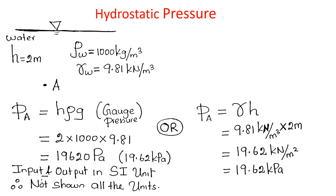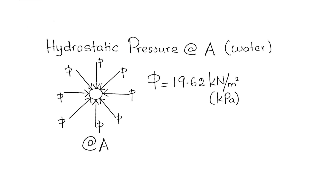Alternatively, P_A equals γ·H. Here we put γ instead of ρg. Using γ of water equals 9.81 kN/m³ and H equals 2 m, this gives P_A equals 19.62 kN/m², i.e., 19.62 kPa. Hydrostatic pressure at A is 19.62 kPa, and pressure at A is equal in all directions.